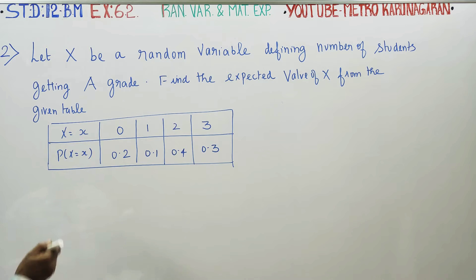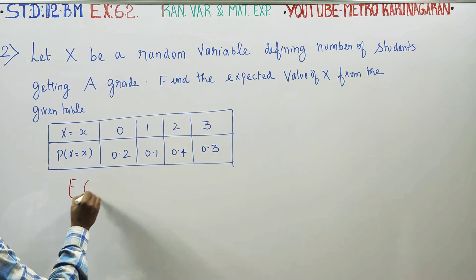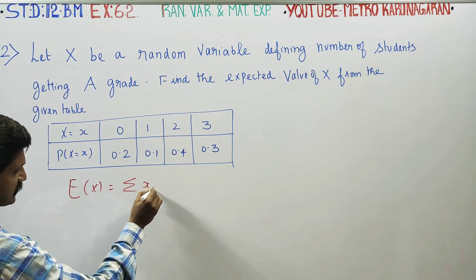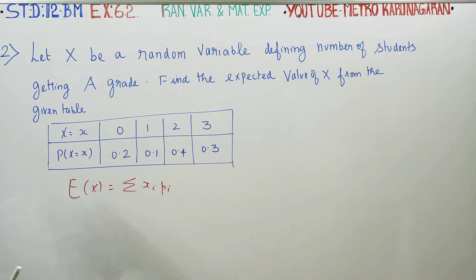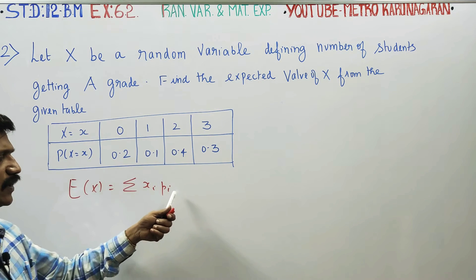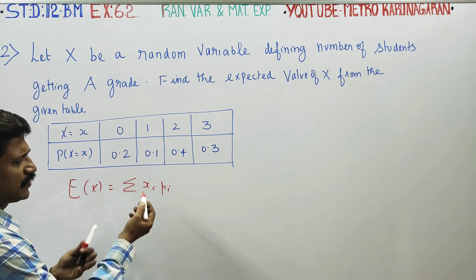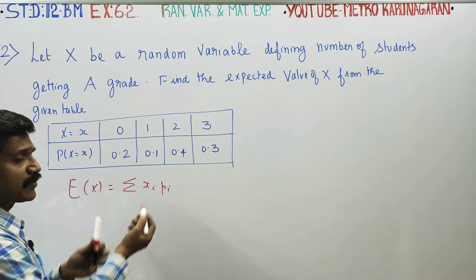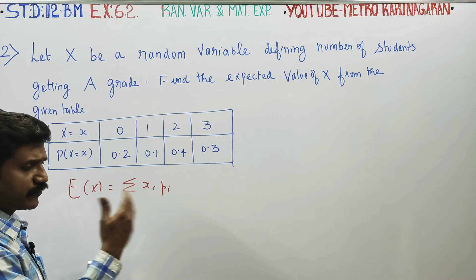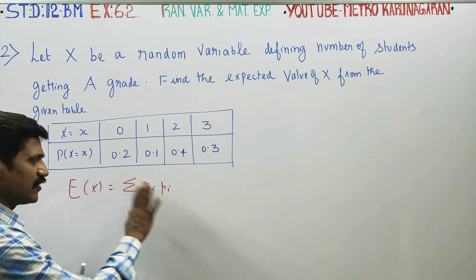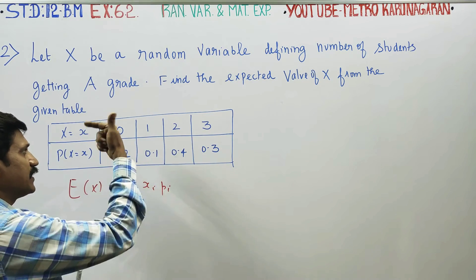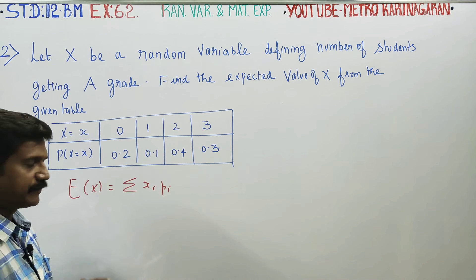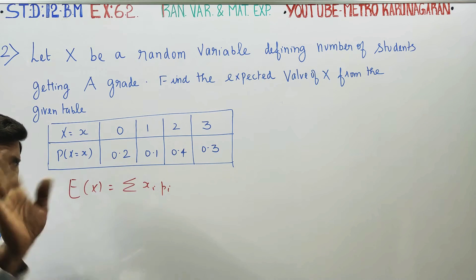Expected value is called expectation of X. The formula is ΣXᵢPᵢ — you multiply the value of X by its corresponding probability. The concept is to take each value of X and multiply it by Pᵢ, then add them all together.